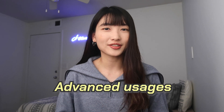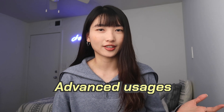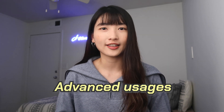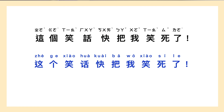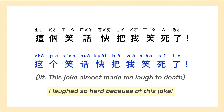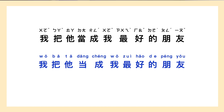There are some advanced usages of the 把 construction. Like you might hear people say: 这个笑话快把我笑死了 — I laughed so hard because of this joke. 我把他当成我最好的朋友 — I see him as my best friend. If you're interested to know why the 把 construction is used in these sentences and you want to learn how to use them, please let me know in the comments.